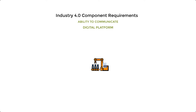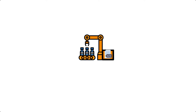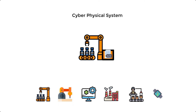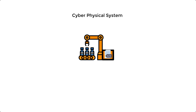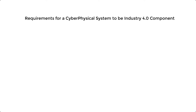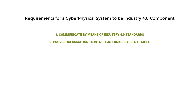The digital platform could be inside of the physical machine itself, or an external physical object such as a computer. Industrial components or systems that are equipped with such communicating capabilities are called cyber-physical systems, and the production facility that incorporates cyber-physical systems is called a cyber-physical production system. In addition to the ability to communicate with other Industry 4.0 components, a cyber-physical system needs to be uniquely identifiable and addressable across the entire manufacturing value chain.